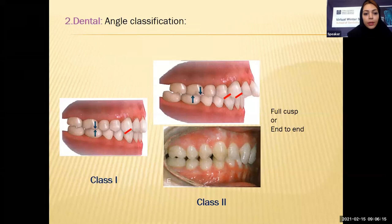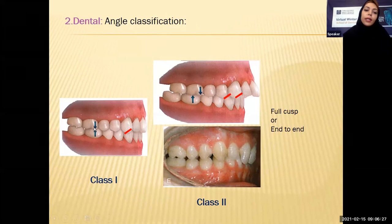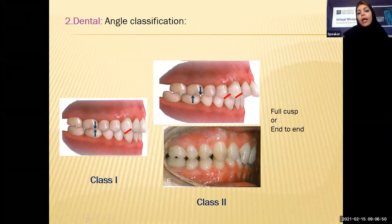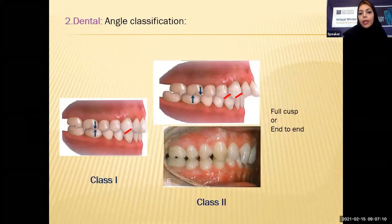First, I will talk about the class 1 normal relationship. In class 1 molar relationship, the upper first molar is located slightly behind the lower first molar — the tip of the mesial cusp of the upper 6 is located in the central groove of the lower molar. When a patient is class 2 and the upper dentition moves forward relative to the lower jaw, the tip of the mesial cusp of the first upper molar is located anteriorly. In class 1 canine relationship, the mesial slope of the upper canine is tangent to the distal slope of the lower canine.